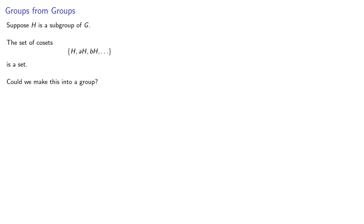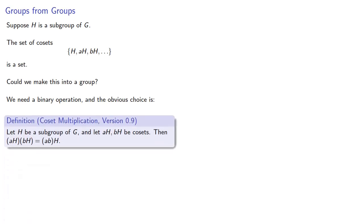Now remember, in order to do that we need a binary operation and the obvious choice is the following. Let H be a subgroup of G and let AH and BH be cosets. Then let's define AH by BH to be ABH.